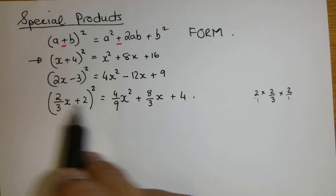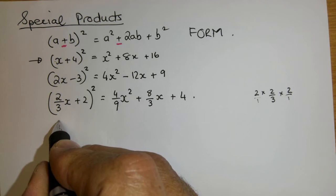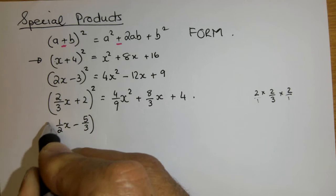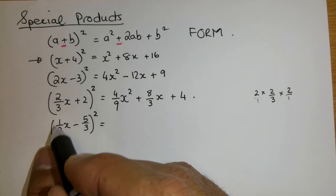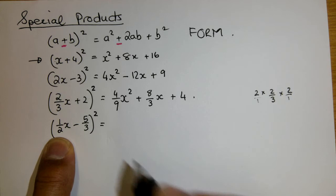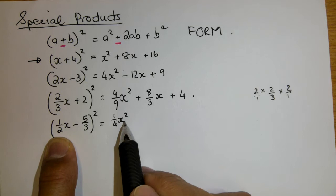How can I make this more difficult? You can't really make it more trickier than the fractions. Let's put a negative in. Let's leave a fraction of a half minus 5 over 3 which I'm going to square. So let's see. It is the first term squared. So a half squared is a half times a half which is a quarter x squared.